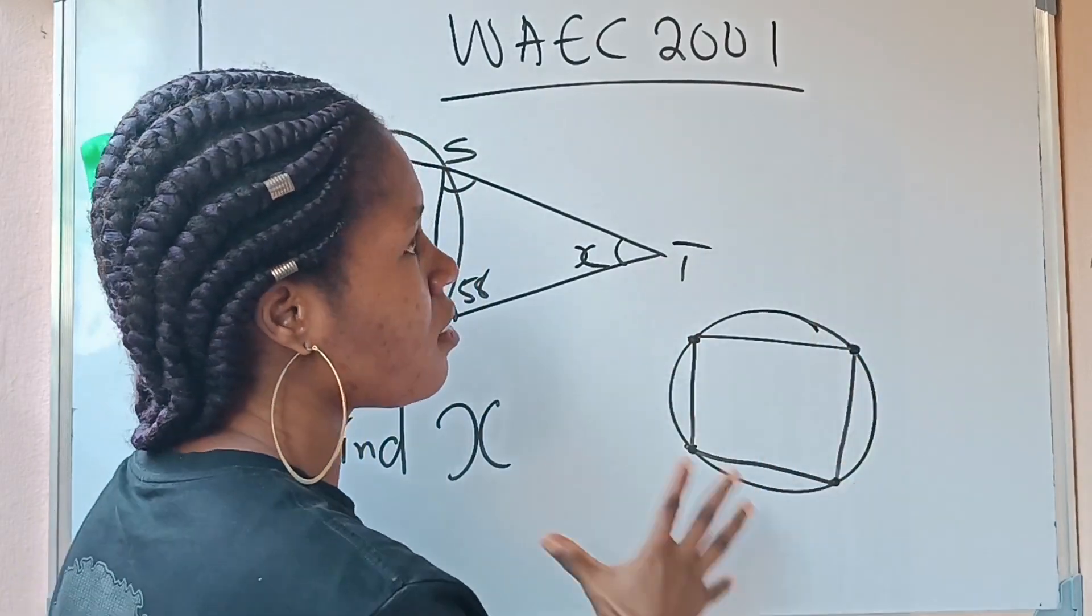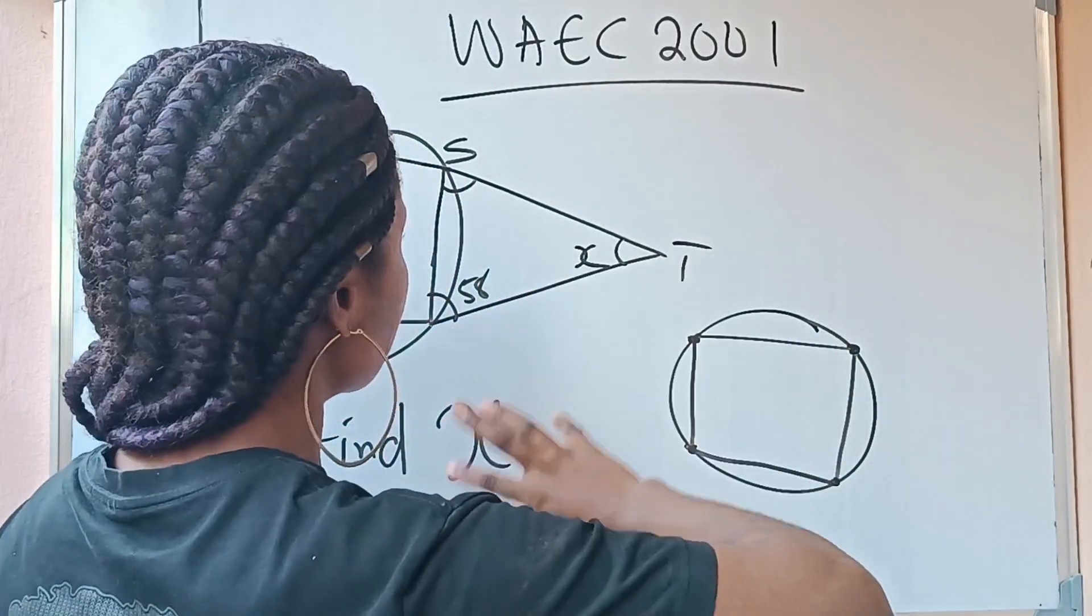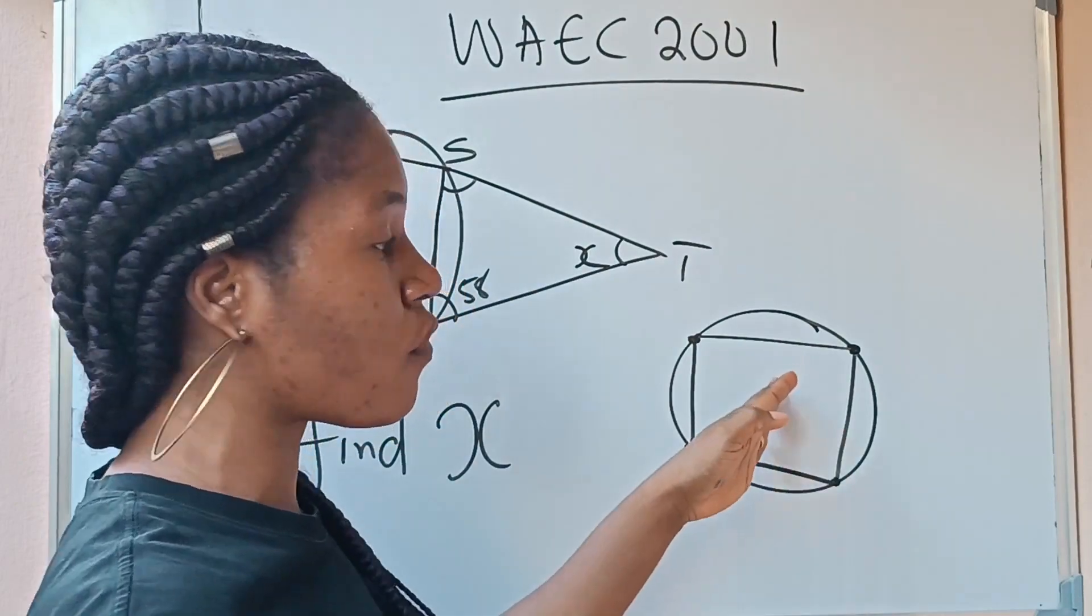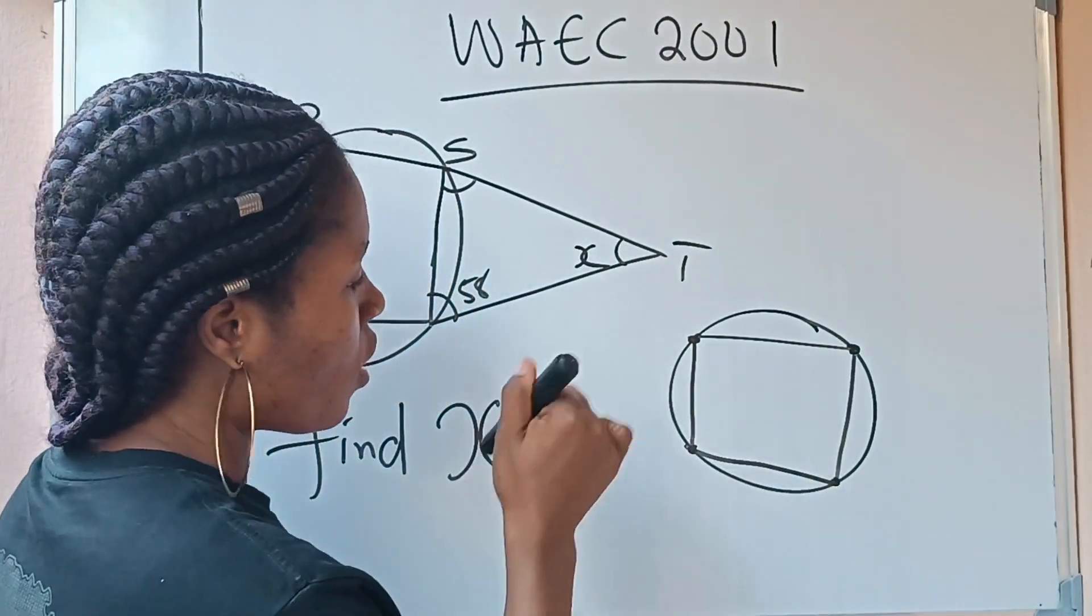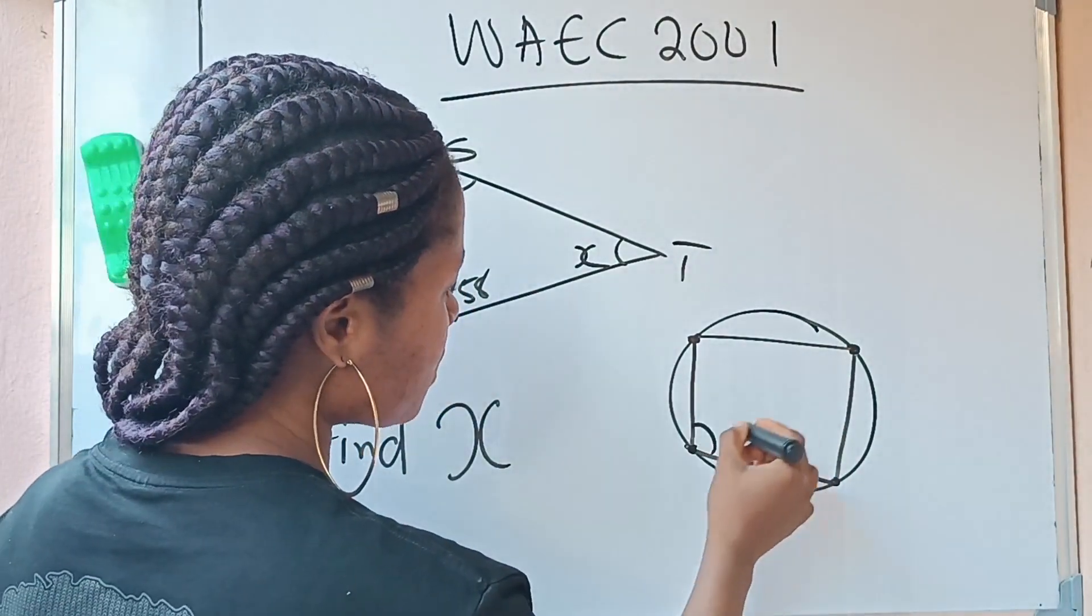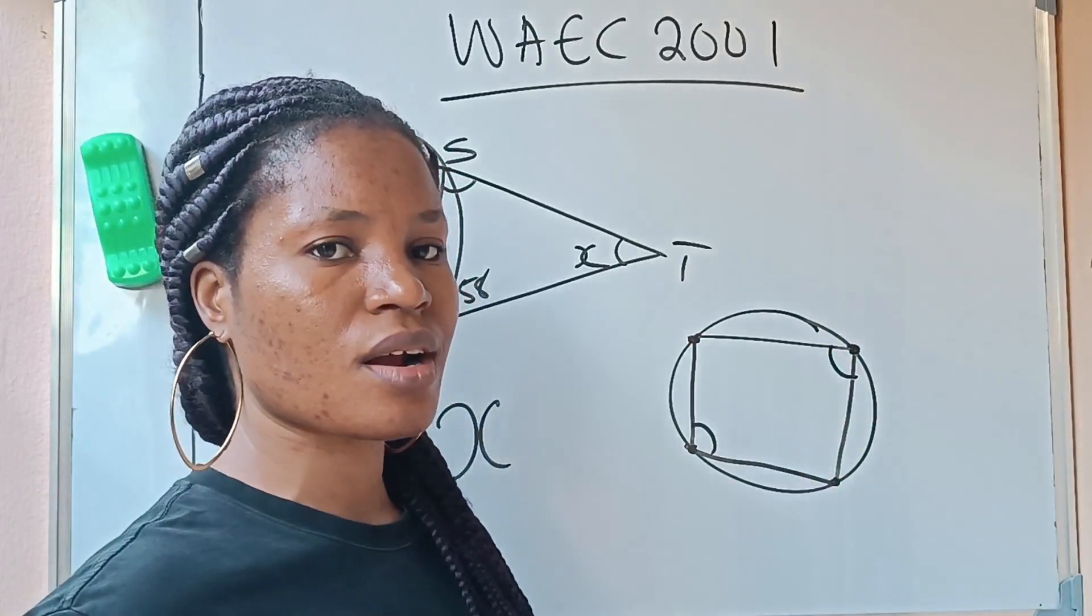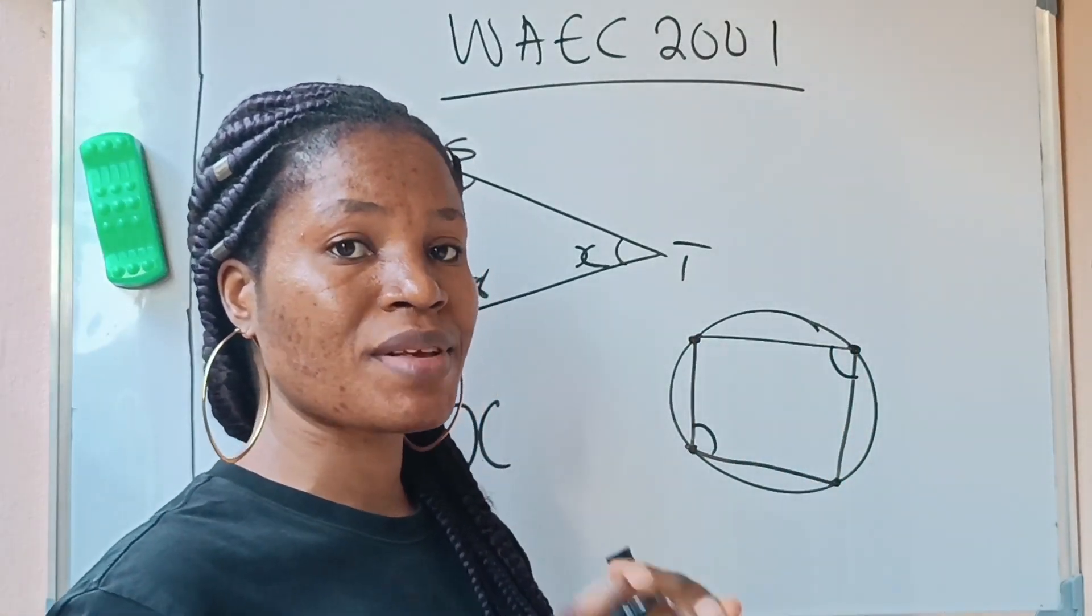Now, there are certain theorems that are involved in cyclic quadrilateral. One of them says that the opposite angles of cyclic quadrilateral will add up to 180 degrees. That means they are supplementary.